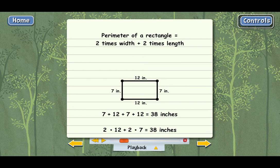A lot of times, perimeter is represented by the letter P, and then W stands for width, and L stands for length. So the perimeter of a rectangle is written like this.